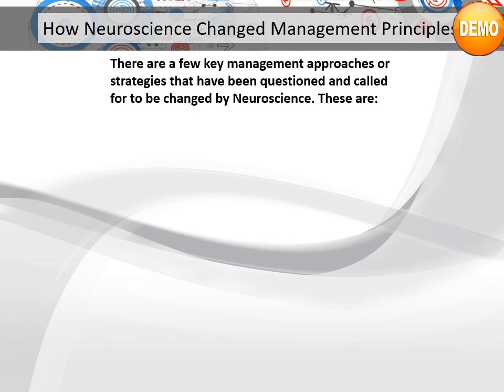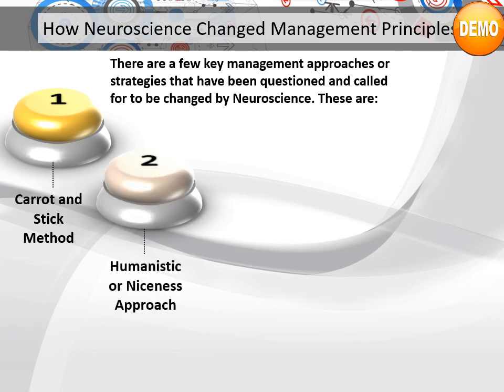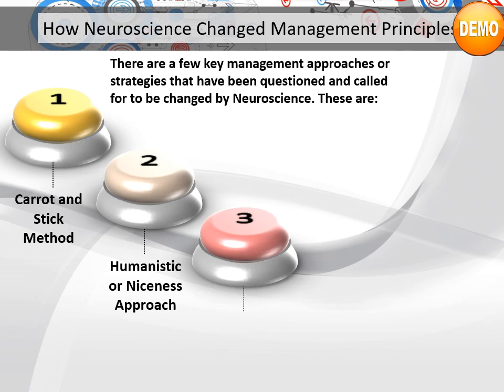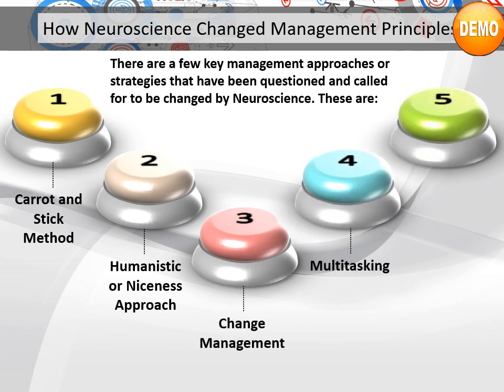There are a few key management approaches or strategies that have been questioned and called for change by neuroscience. These are: number one, the carrot and stick method; number two, the humanistic or niceness approach; number three, change management; number four, multitasking; and number five, motivation and employee engagement.